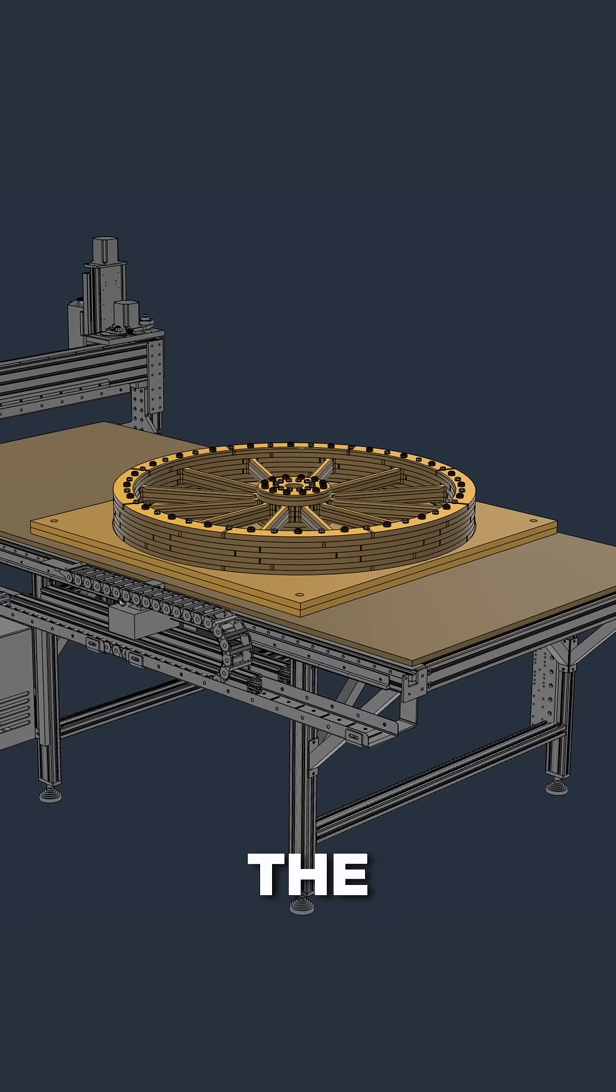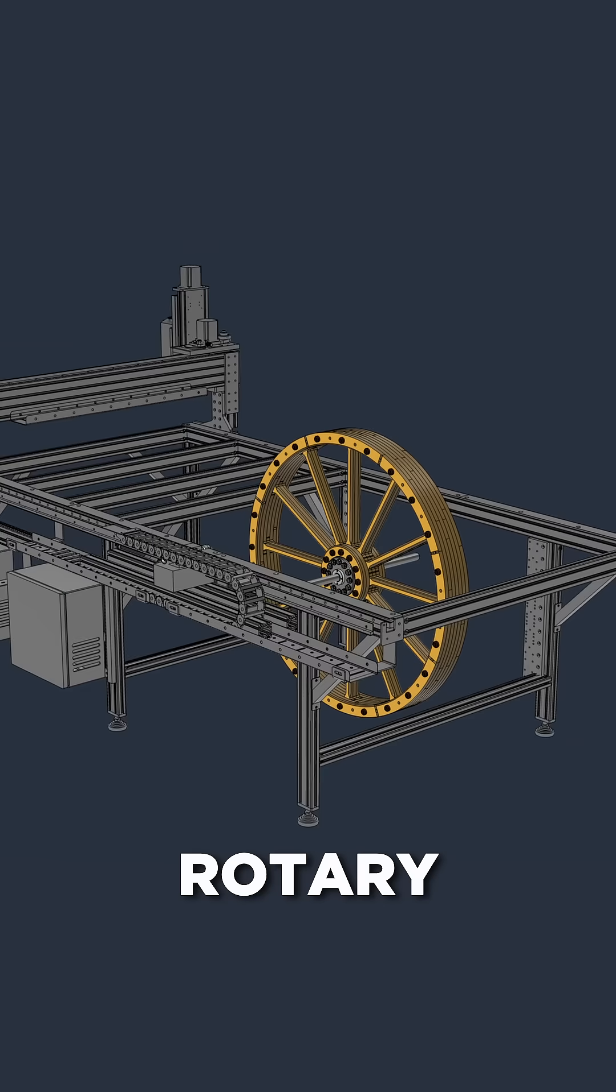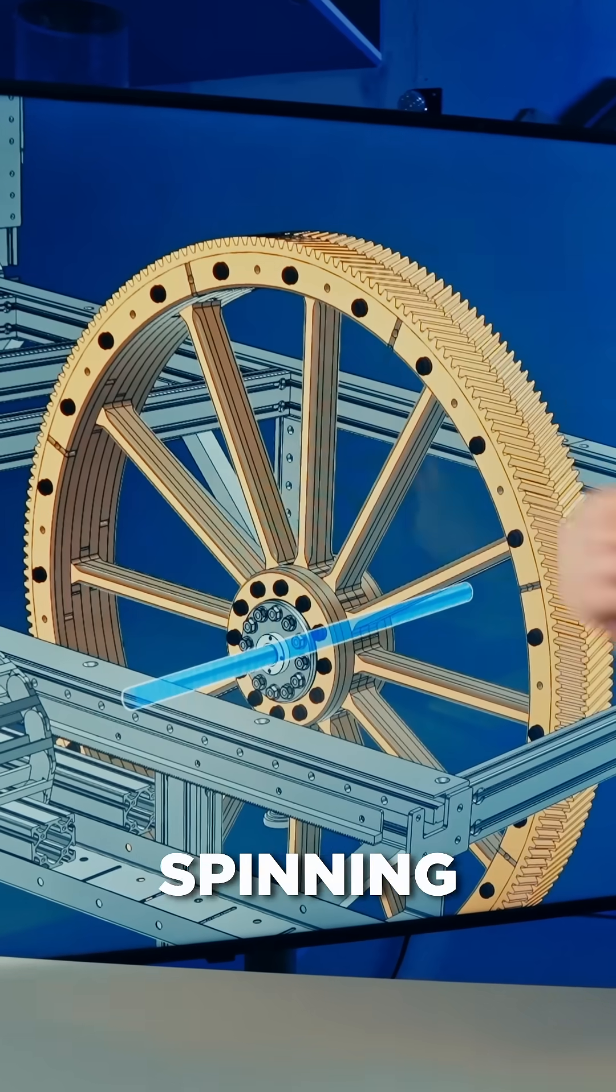What we're gonna do now, is that we're gonna take the plywood blank to a rotary CNC machine. Here we're cutting the gear teeth. This thing is spinning around, and the CNC spindle is cutting from above or from the side.